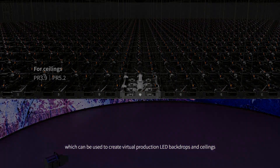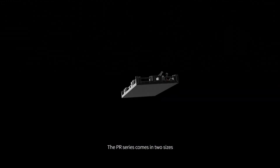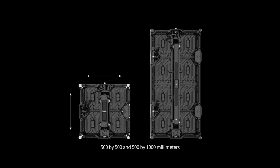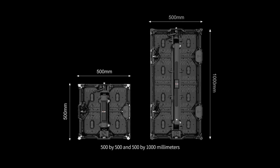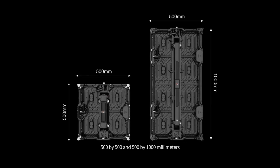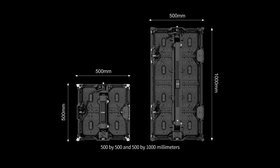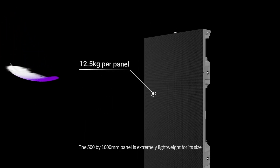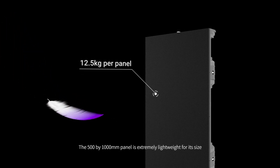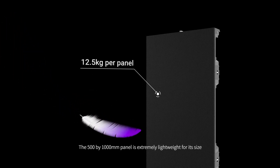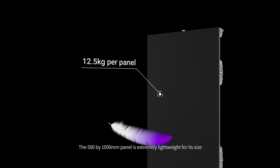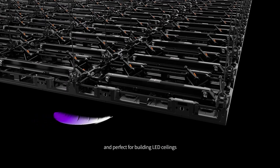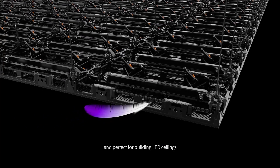The PR Series comes in two sizes: 500x500 and 500x1000mm. The 500x1000mm panel is extremely lightweight for its size and perfect for building LED ceilings.